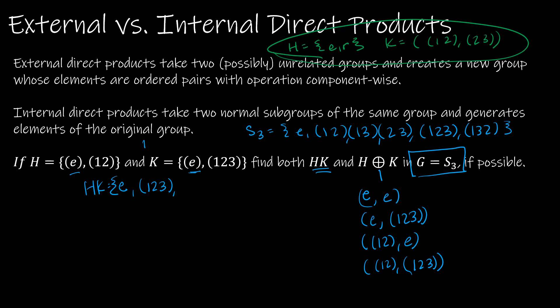And if I take (1,2) times (1,2,3), that's going to give me one goes to two, two goes to one, and then two goes to three, three stays fixed. So it's going to give me these three elements.